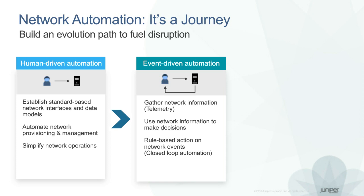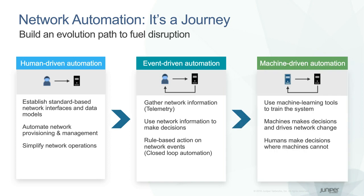We're taking this concept into networking, where we are automating key network functions, but also pulling critical network information back through telemetry. We subsequently use this critical network information to create additional policy or rule-based automation. The next stage that a number of the Juniper team are currently working on is artificial intelligence — leveraging algorithms to process large amounts of data from the network and to deduce what needs to happen next. This is still very far off, but we're working toward our grand vision of a self-driving network.